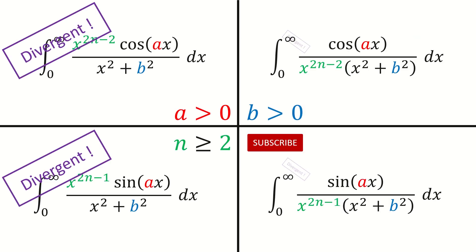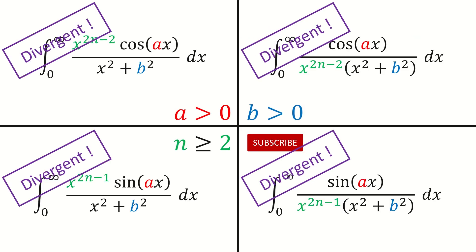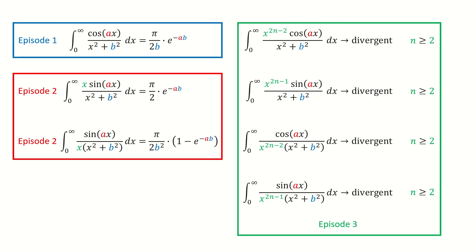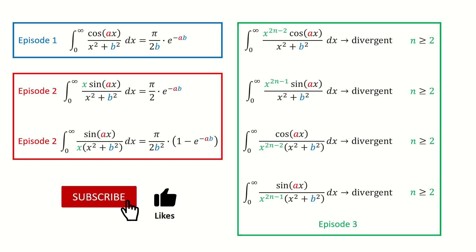So we have shown all four cases are divergent. That's why in the last video I said the answer is very simple — because all of them are divergent. In the last slide, I summarized the results from the three videos we did on this topic. Don't forget to subscribe to my channel and give a like.